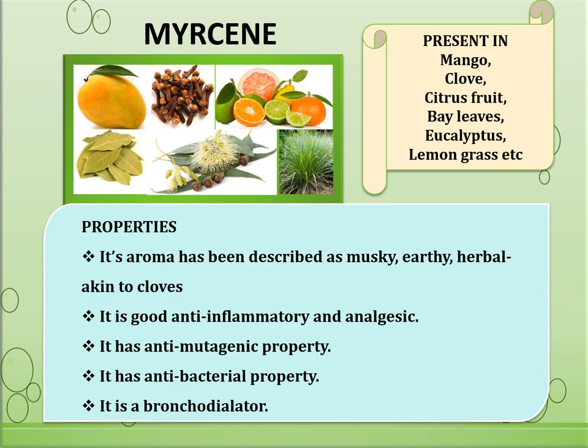Myrcene has anti-mutagenic properties, blocking the action of cytochrome b and pro-mutagenic carcinogens. It also has antibacterial properties, and since it is antibacterial, anti-inflammatory and a bronchodilator, it is used in the treatment of asthma. A coarse powder of 3 cloves, 12 to 15 basil leaves, and 10 black peppers boiled with 200 ml of water until it reduces to 50 ml — administration of this decoction mixed with honey two times a day is beneficial to reduce the features of asthma.